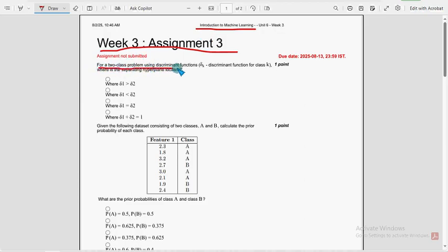For a two class problem using discriminant functions, where is the separating hyperplane located? For the first question, third option is the probable solution guys, where discriminant function for class 1 equals to class 2.